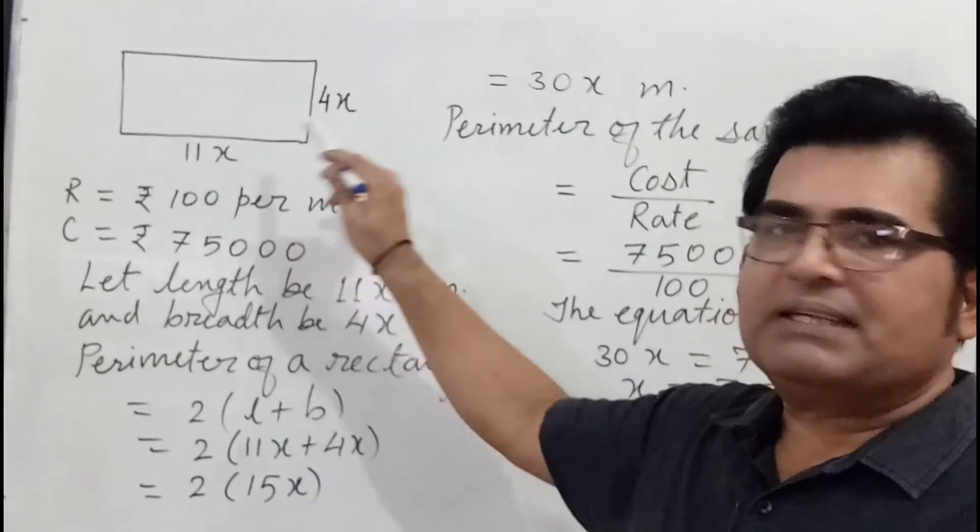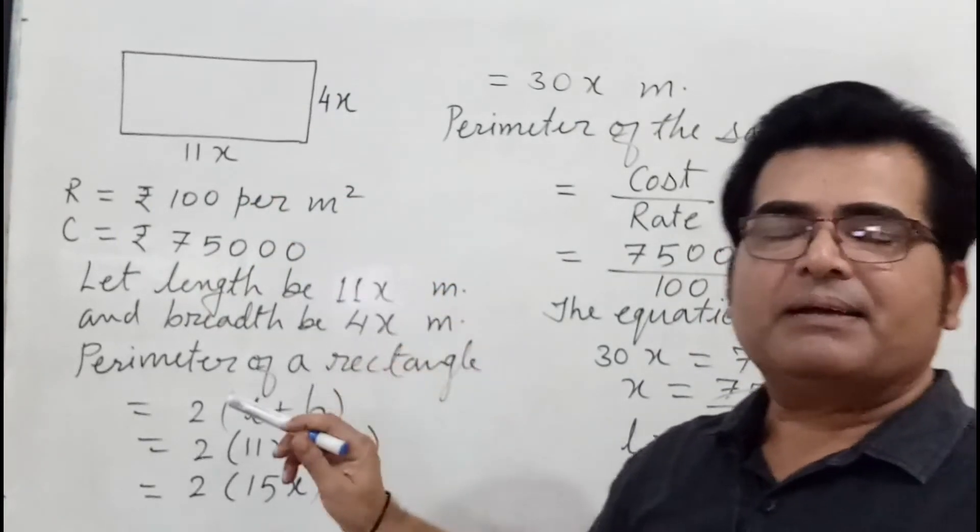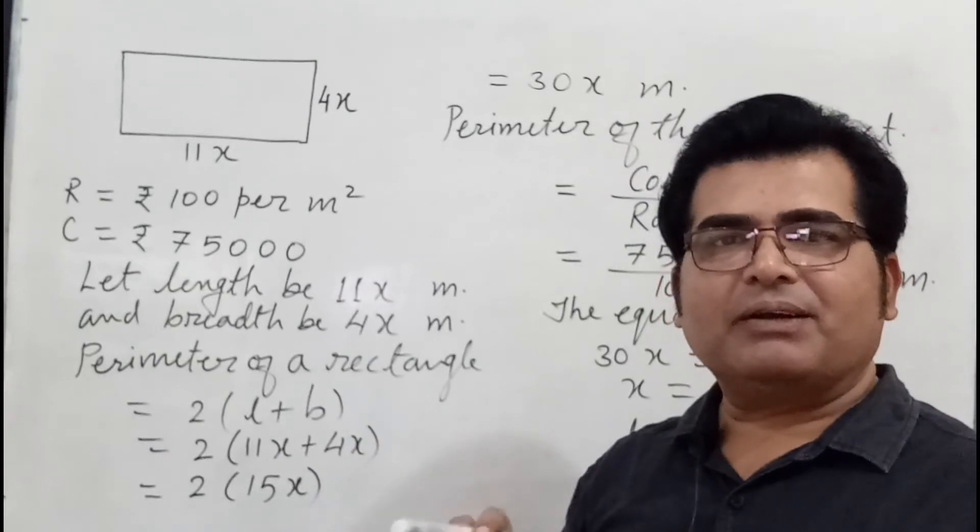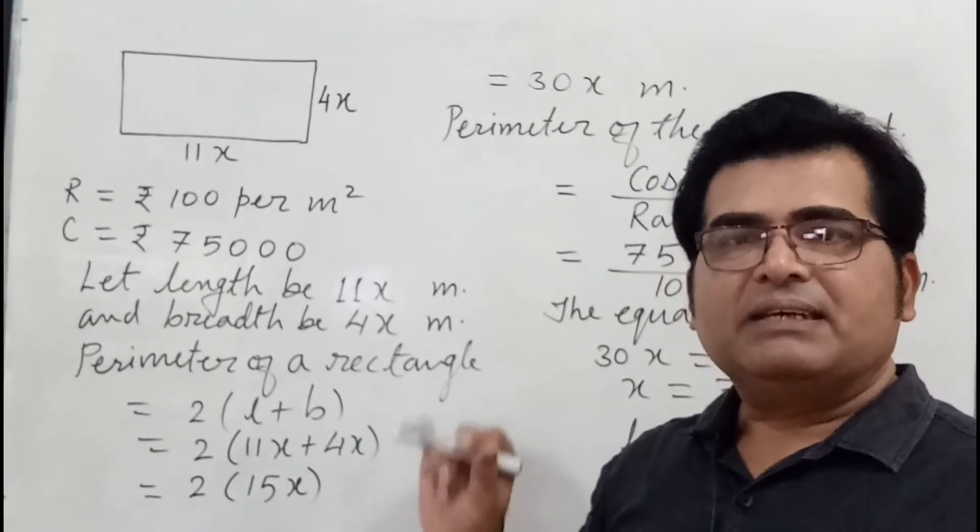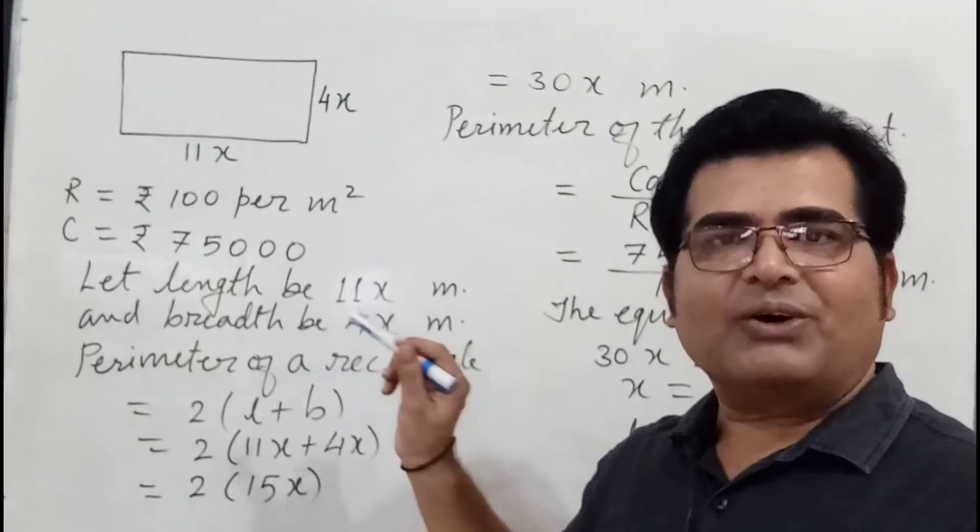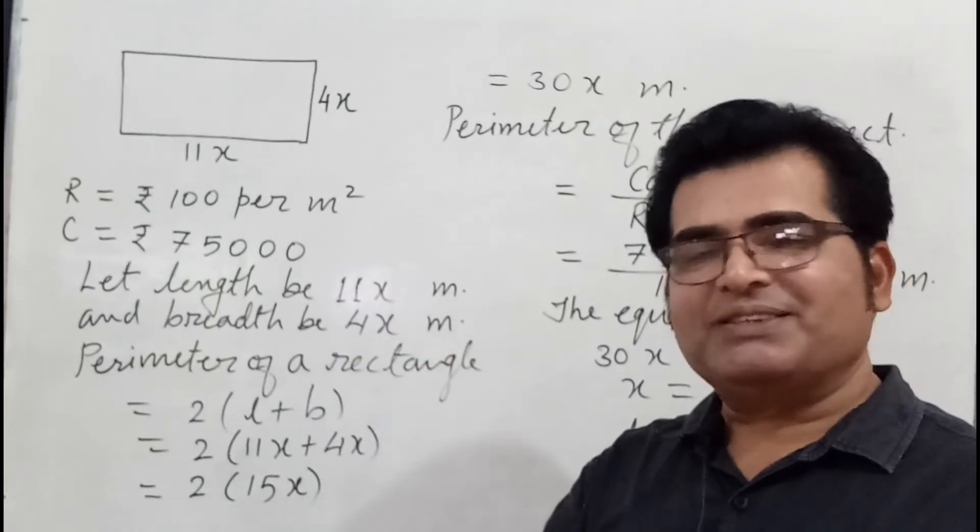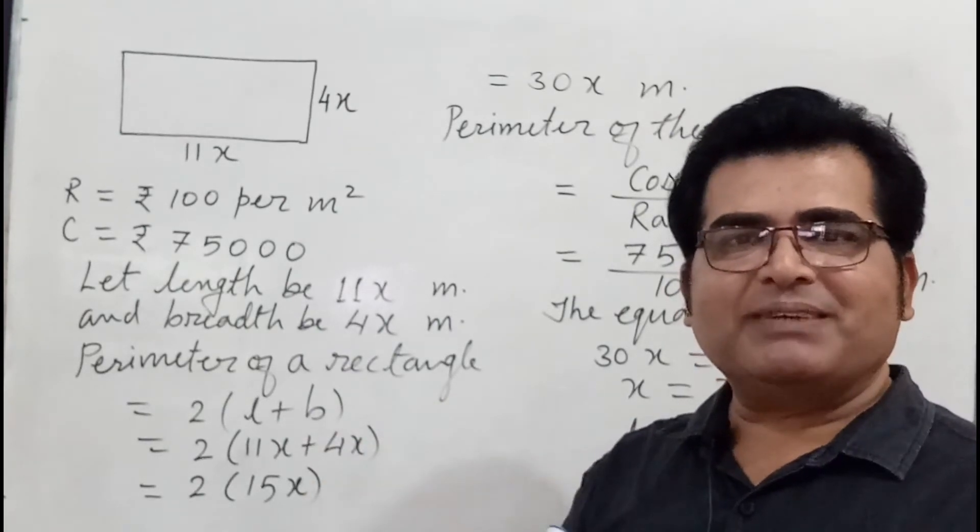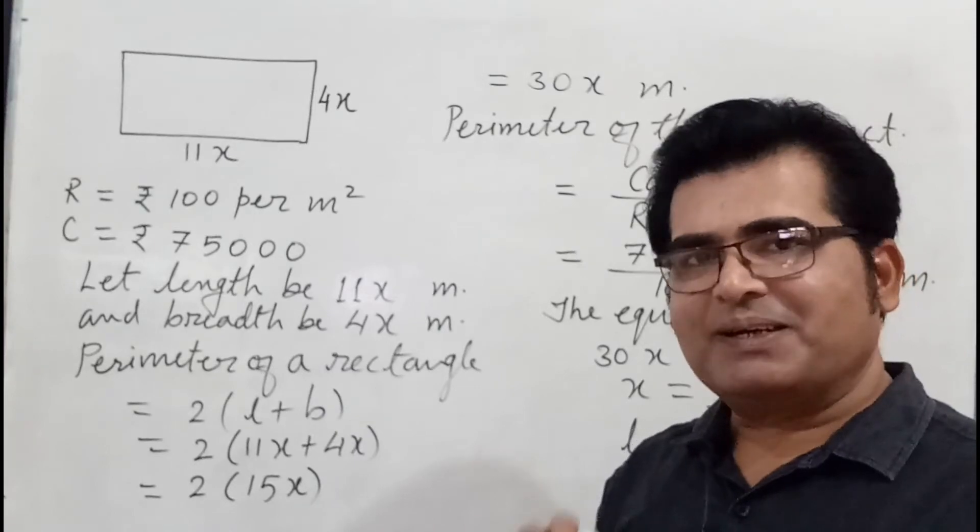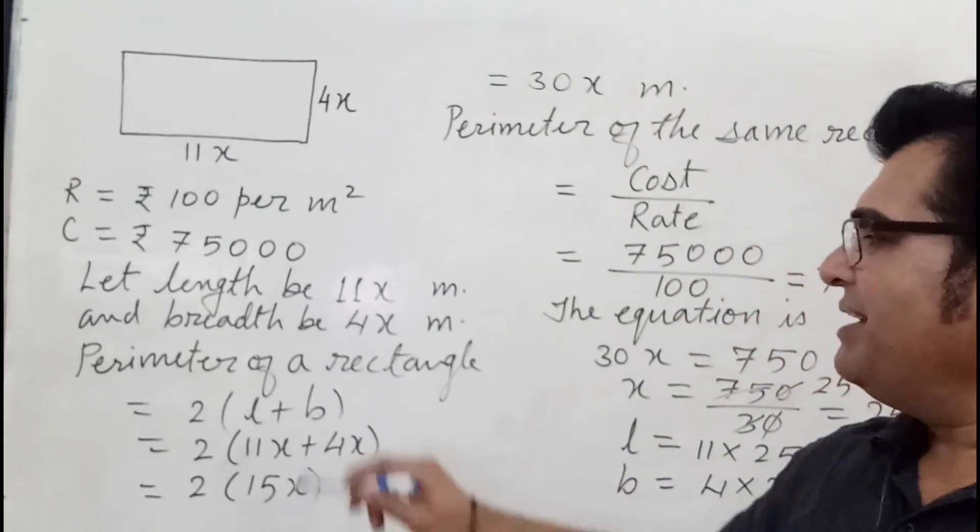Then we apply the perimeter of the rectangle formula. Why perimeter of a rectangular formula? Because here the fencing cost and rate is given. Fencing means you have to do the perimeter. Perimeter is called actually the sum of the length of all four sides.